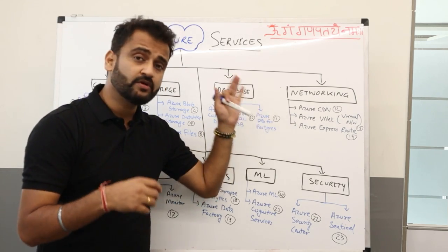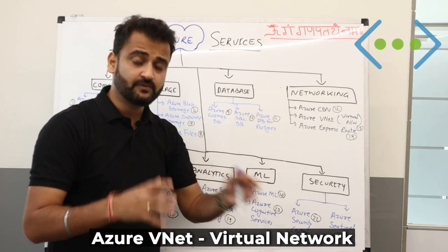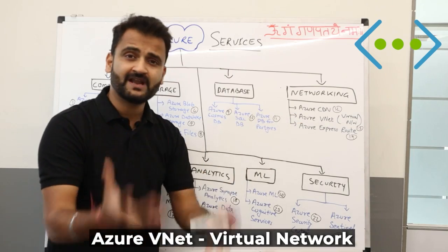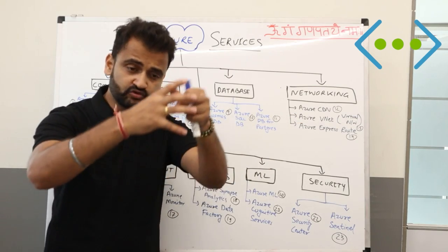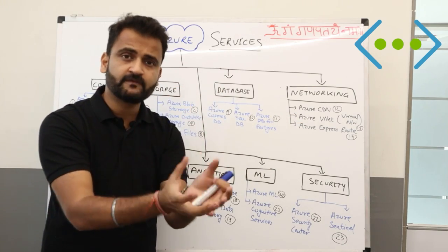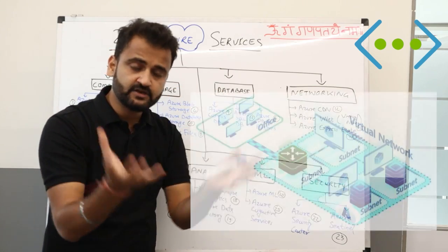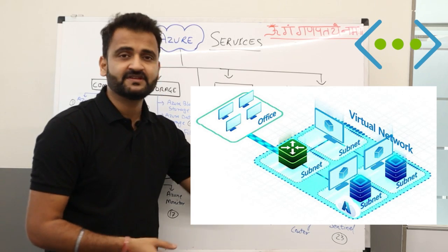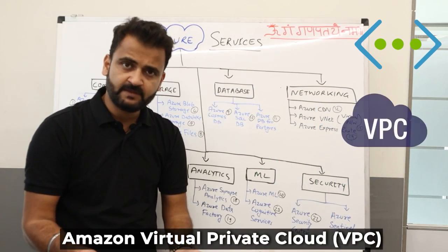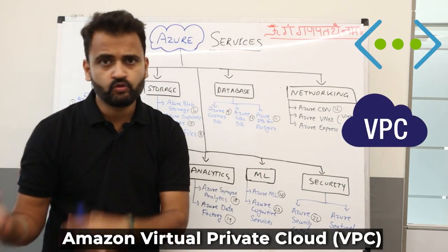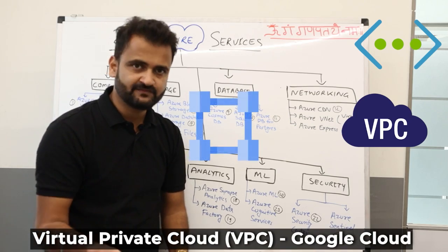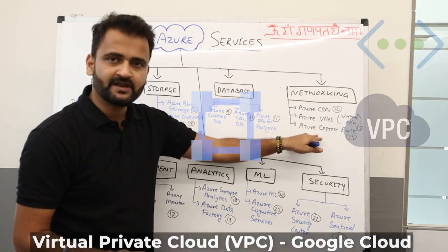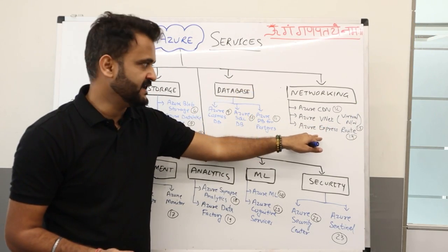The second networking service is Azure VNet — very important as the foundation, because this is your virtual network. You segregate and create groups of resources within your private network on the cloud. On Amazon we have Amazon VPC, and on Google also we have VPC — Virtual Private Cloud. The same concept is called VNet here on Azure.